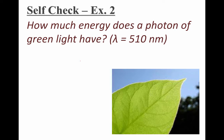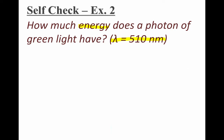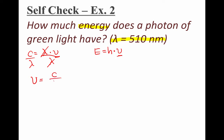Let's try another problem. How much energy does a photon of green light have? The wavelength of the green light is given as 510 nanometers, and I need to use that to calculate the energy. The equation E equals H times nu requires frequency, but I do not have the frequency of the light, which means before I can use this equation, I'm going to have to calculate frequency from the wavelength using the wave equation, solving for frequency by dividing both sides by wavelength.